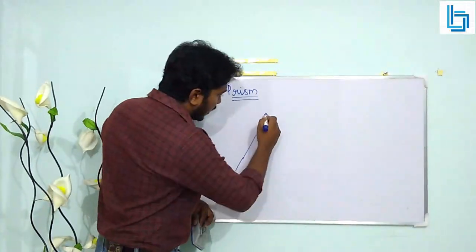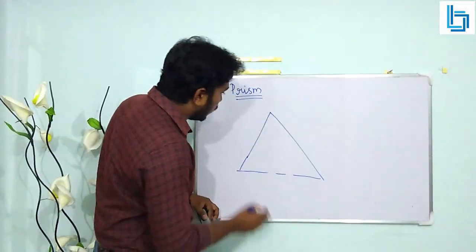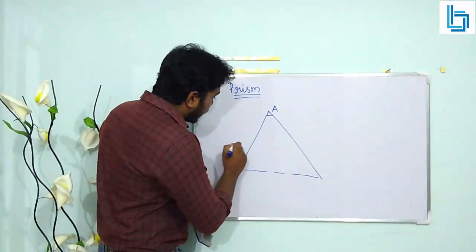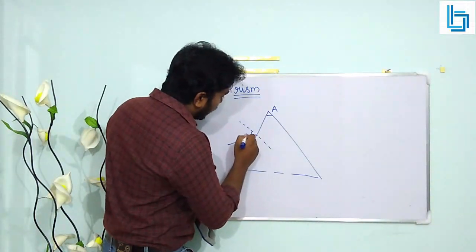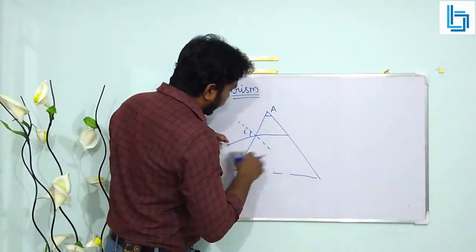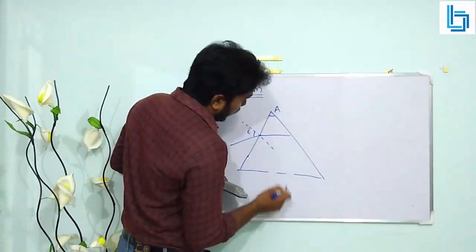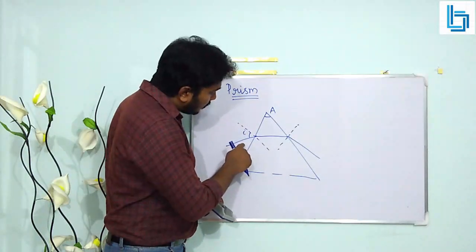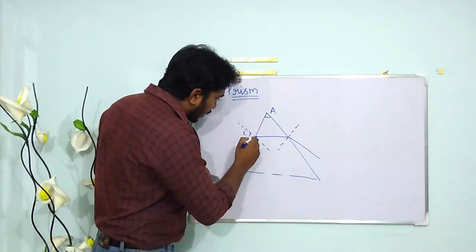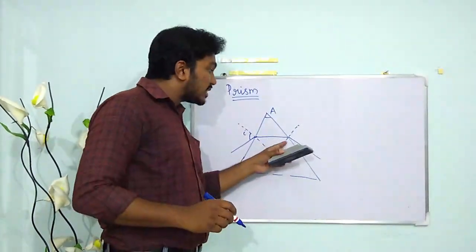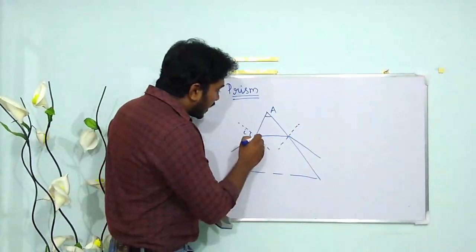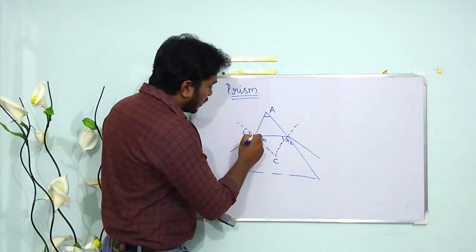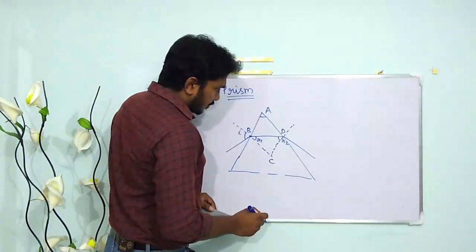Let me draw a small prism here. The angle A marked here is known as the angle of the prism. Light is incident at a certain angle — I draw the normal here and call this the angle of incidence. It gets refracted at the first interface, then at the second interface it undergoes refraction again. Going from rarer to denser medium it bends towards the normal; from denser to rarer it bends away. I label the refraction angles r1 and r2, and mark points B, C, and D.